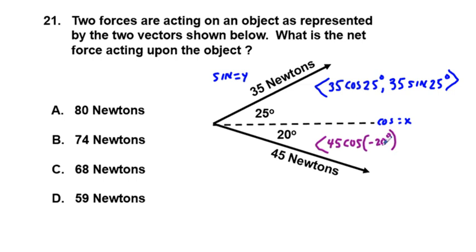or if not negative, we'd have to put it in standard form in terms of rotation counterclockwise from our standard position to the right, which would be 340 degrees. The cosine of negative 20 degrees is the same as the cosine of 340 degrees. And then comma, 45 sine of negative 20 degrees. And that's going to be our form.